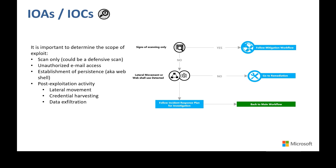We have seen organizations that have had web shells dropped on their Exchange servers that were not ever utilized beyond being dropped for future use. This is where you will want to move to the remediation phase as soon as possible to help protect your organization from further exploits. If you see signs of lateral movement or a web shell being actively used, you need to use your organization's incident response playbook to determine the next path.